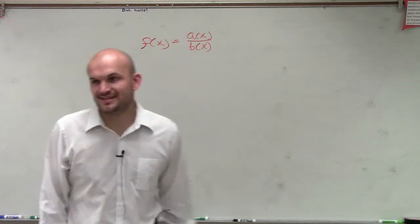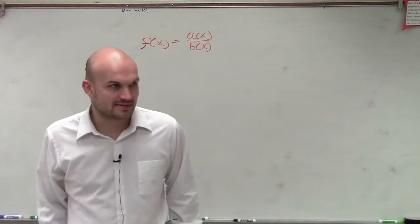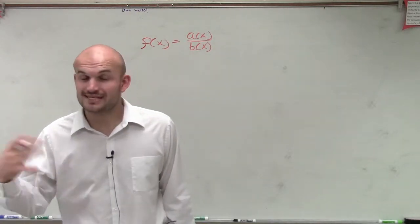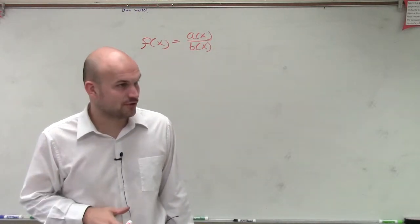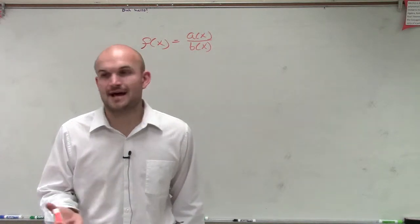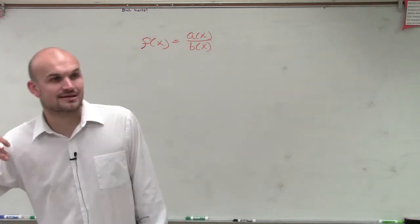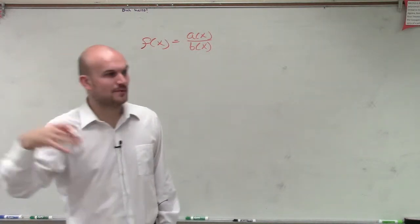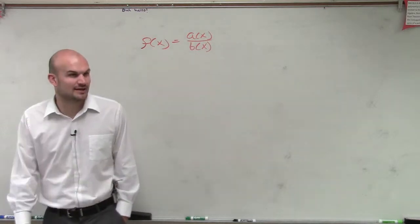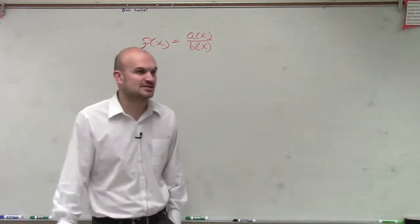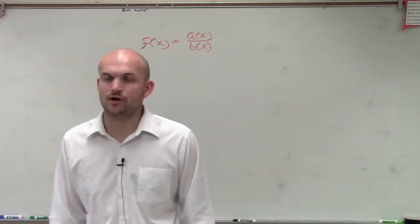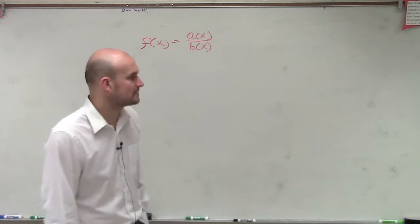f of x equals a of x divided by b of x. It's very similar to the reciprocal function, except rather than just 1 over x, we could have different polynomials up there. It doesn't have to be a 1 in the numerator and just an x in the denominator — we can actually have separate polynomials.